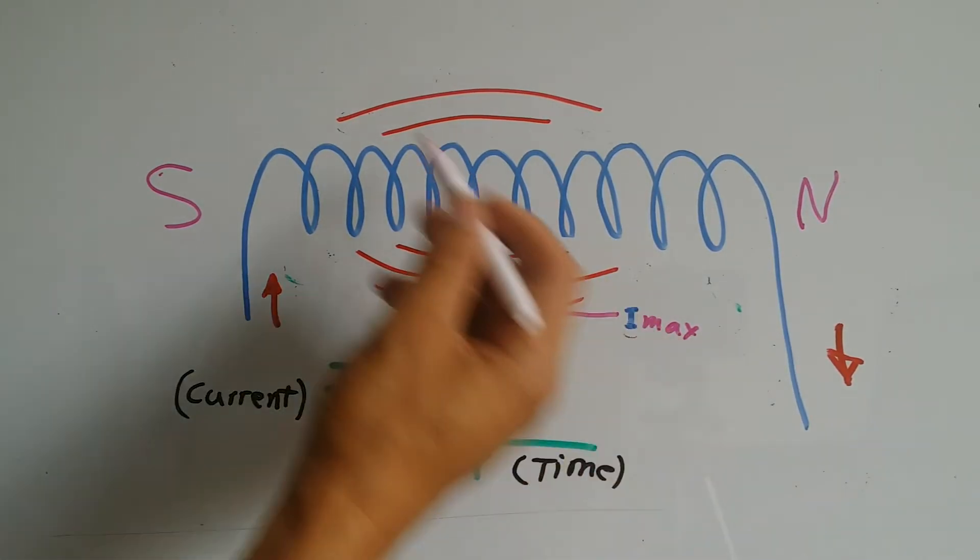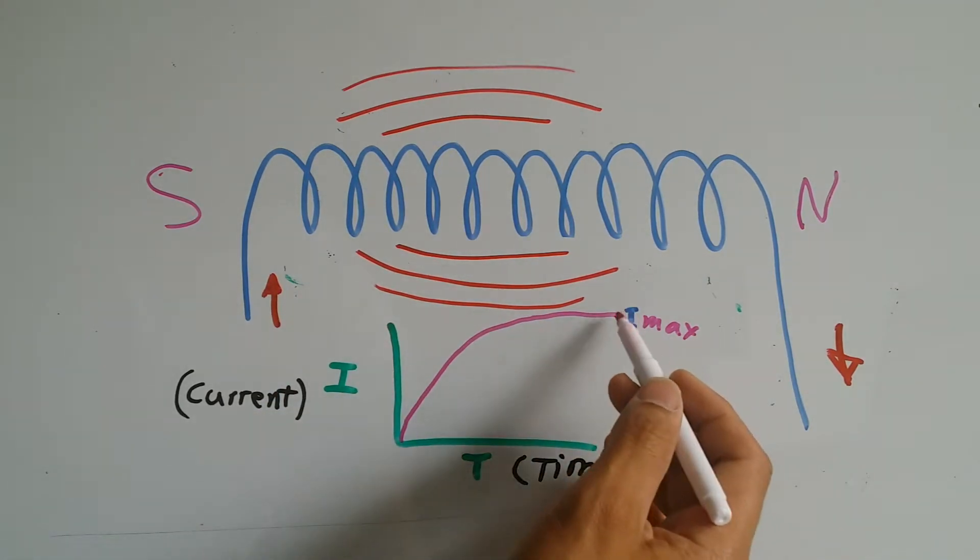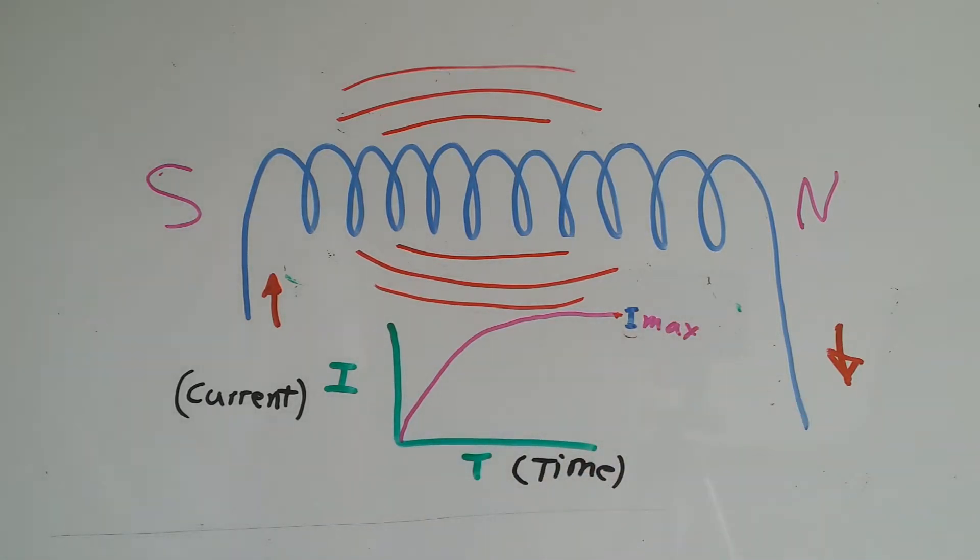When the field gets to a maximum point, then current is maximum, and at that point current will be flowing through the inductor as maximum as the wire will allow.